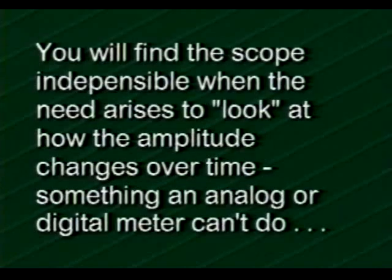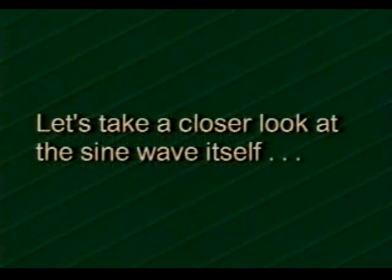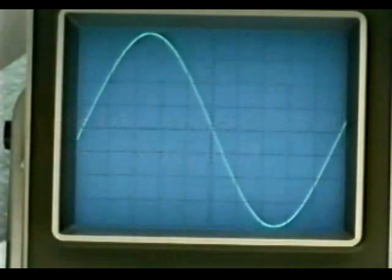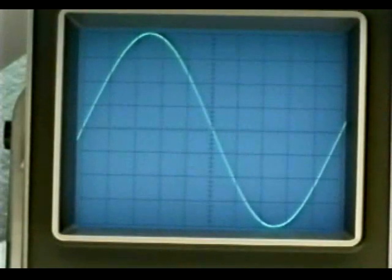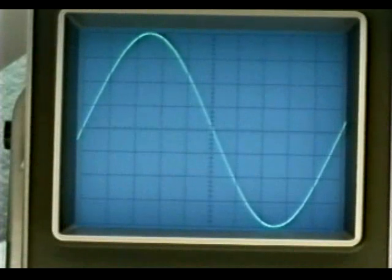To look at how the amplitude changes over time — something an analog or digital meter just can't do. Now it's time to take a closer look at the sine wave itself. The signal you see on the scope trace is a complete cycle of a sine wave, called one full cycle.